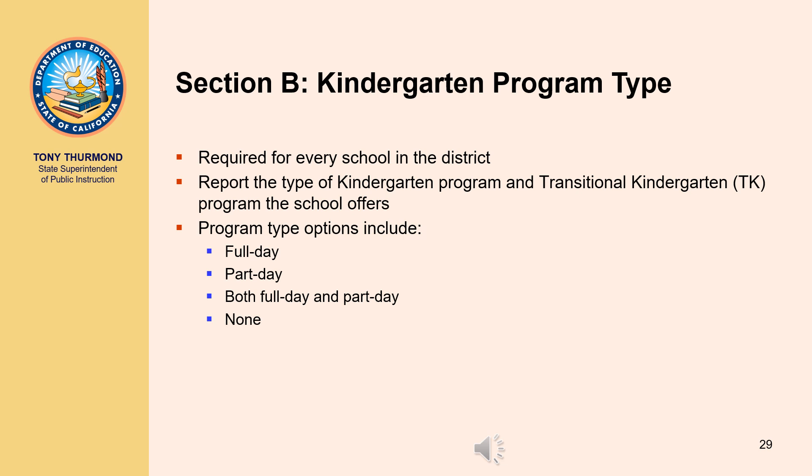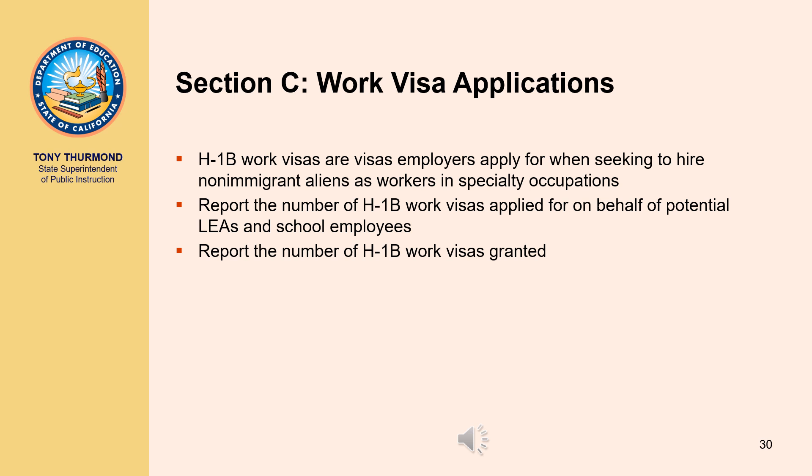This section collects data on the kindergarten and transitional kindergarten program type offered by each school. Data in this section are required to be reported for every school in the district, regardless of whether or not the school serves kindergarten students. Report the type of kindergarten program and transitional kindergarten program the school offers by selecting one of the available program types. Program type options include full day, part day, both, or none. While the maximum school day in kindergarten is four hours, schools that have adopted an early primary program or extended day kindergarten are allowed to exceed four hours and may offer a full day program.